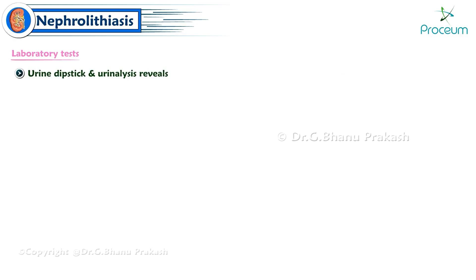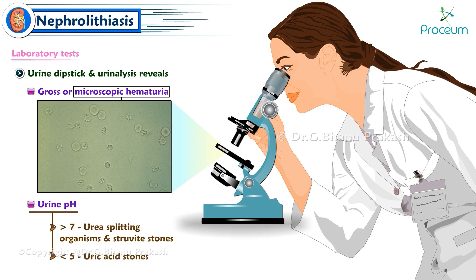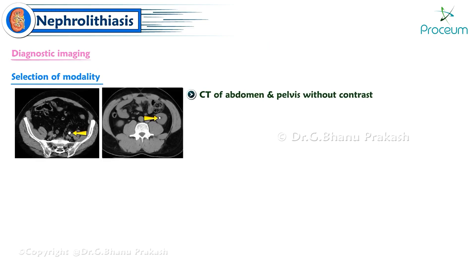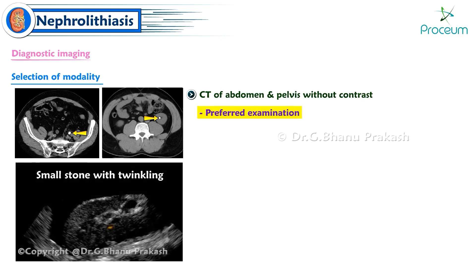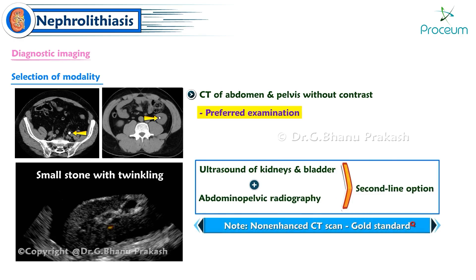Urine dipstick and urinalysis findings include gross or microscopic hematuria. Urine pH above 7 suggests urease-splitting organisms and struvite stones; pH below 5 indicates uric acid stones. CT of the abdomen and pelvis without contrast, using low-radiation-dose protocols, is the preferred exam for most adults with suspected nephrolithiasis. Non-enhanced CT scan is the gold standard.